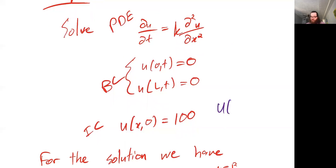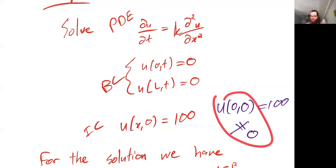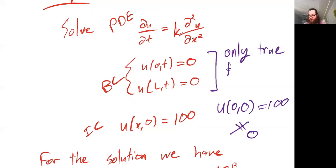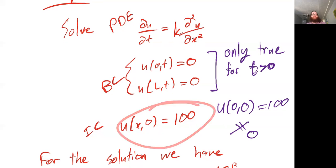So U(0, 0) equals 100, which is not equal to zero — yet the boundary condition wants U(0, 0) to equal zero. Generally what we do is say that these boundary conditions are only going to be true for T strictly greater than zero, to allow for situations like this. That's worth noting as an observation.